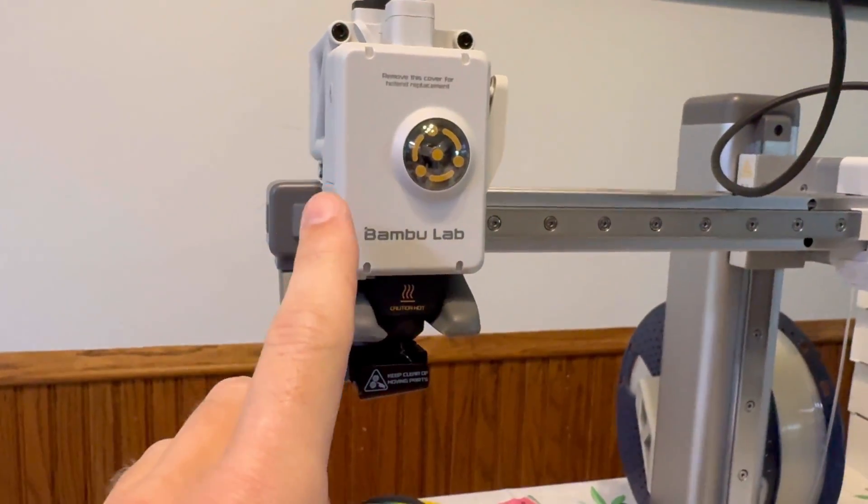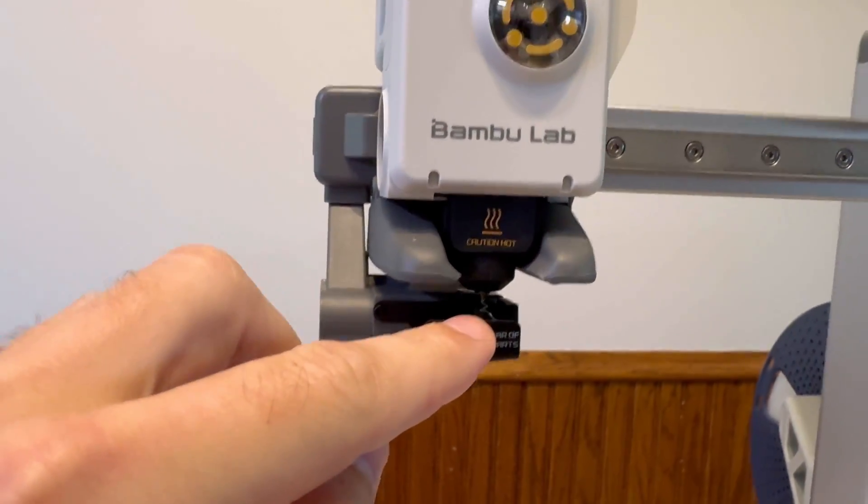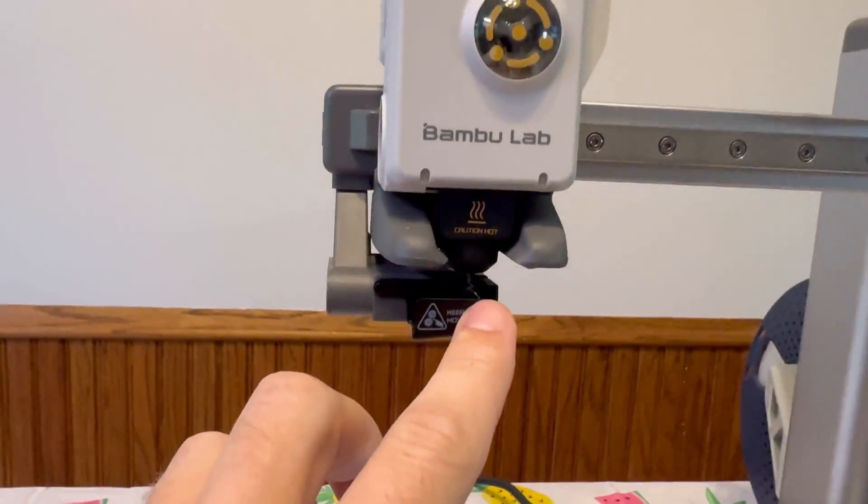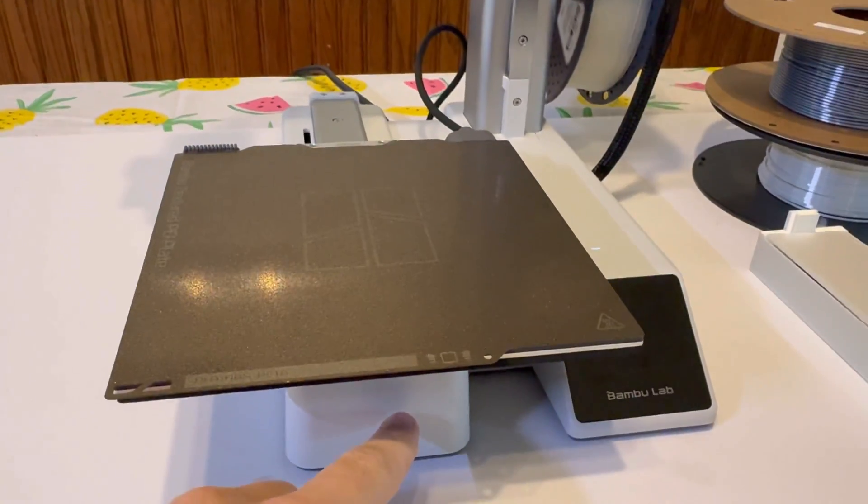So we're going to work our way dismantling this entire head unit. We're going to work from the bottom here at the nozzle and we're going to work our way all the way up here so that we can find the piece of filament that's stuck in here creating our clog. Step number one is to make sure your machine is shut off.